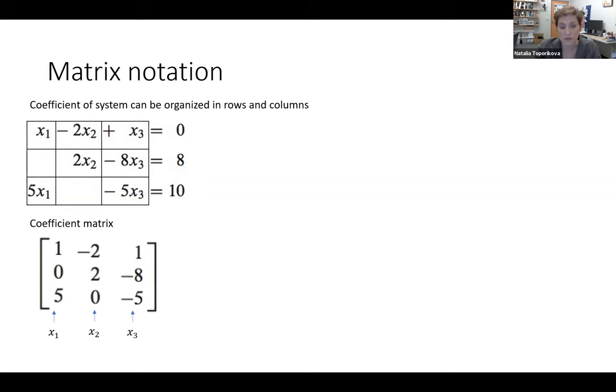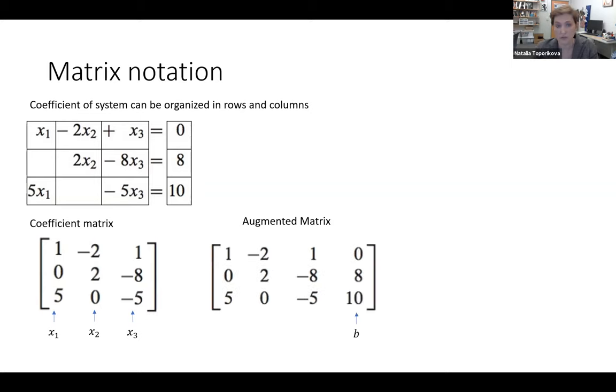We can also add the right hand side, or the numbers on the right hand side, to the matrix, and then we will call it an augmented matrix. So we can take the right hand side and add it as a column to the right of our coefficient matrix.